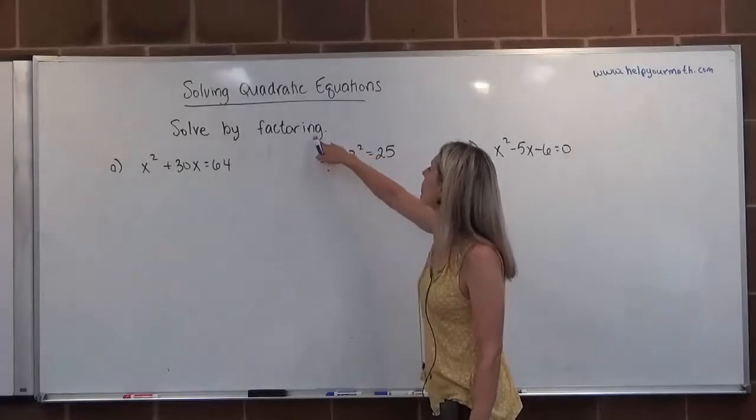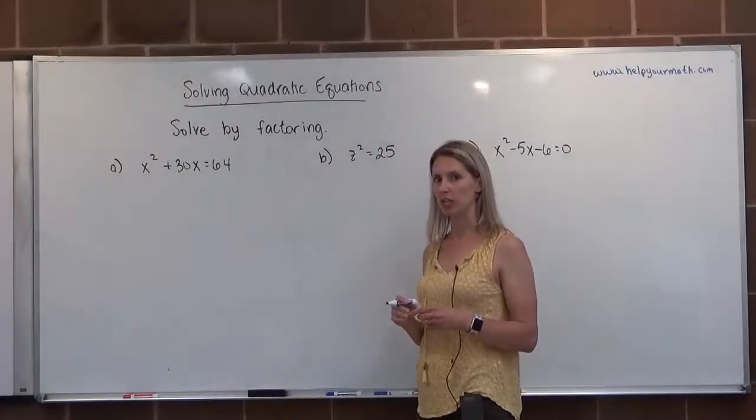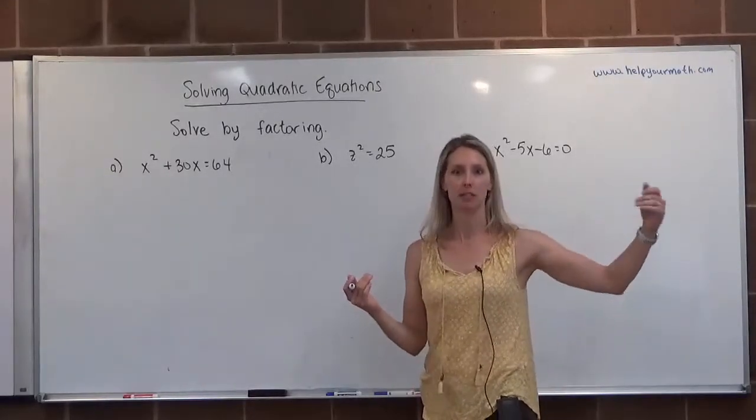So if we solve by factoring, what we want to make sure, since we're dealing with an equation, we want one side of the equation to equal zero. So you're going to have to do things to it, potentially, so that it says something equals zero.